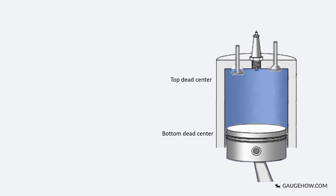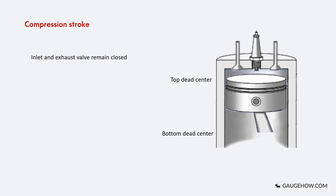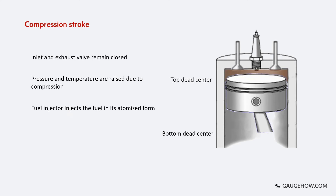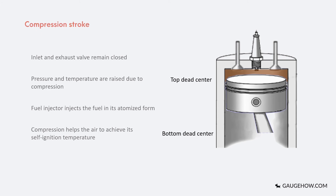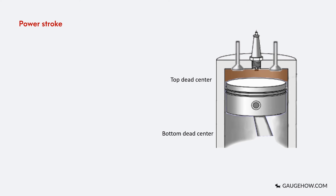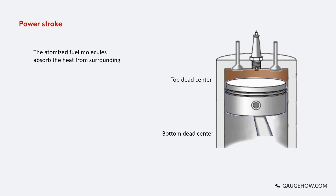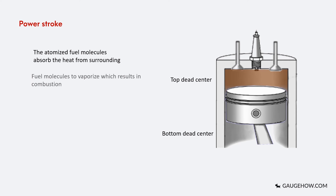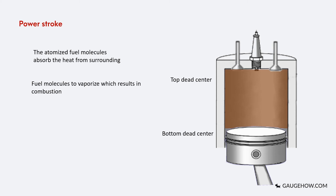In the second stroke, the compression stroke, both valves remain closed, isolating the combustion chamber from the atmosphere. Pressure and temperature are raised due to compression, thus it has a high compression ratio. At the end of the stroke, the fuel injector injects fuel in its atomized form and compression helps the air to achieve its self-ignition temperature. After achieving the self-ignition temperature, in the power stroke, the air turns hot and the atomized fuel molecules absorb heat from the surroundings. This causes the fuel molecules to vaporize, resulting in combustion and a large amount of energy is generated.